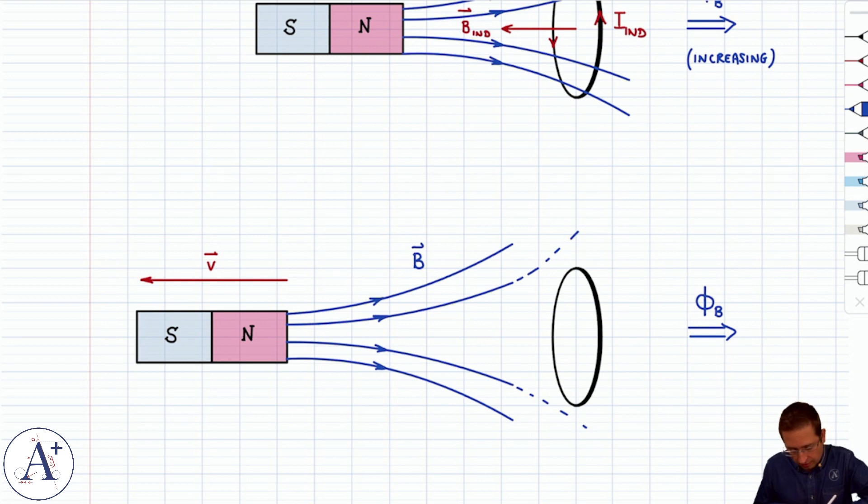We still have magnetic flux to the right, but it's decreasing in this case. This is the perfect illustration of why you care about whether the flux increases, decreases, or stays the same. You do not care about the direction of flux all by itself at any given moment. You care about how the flux changes.